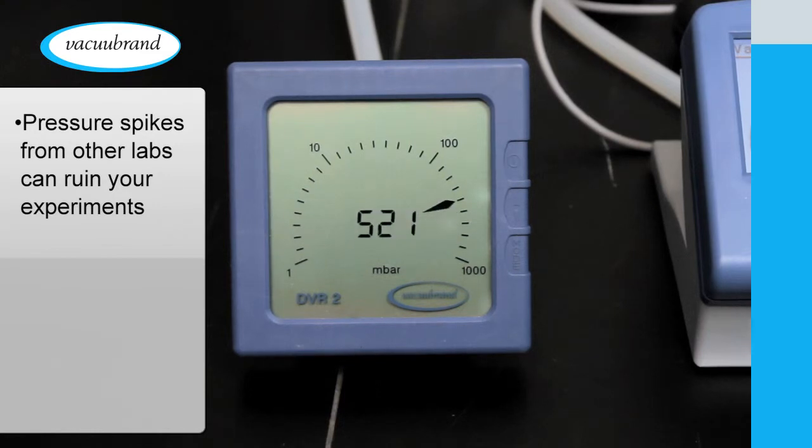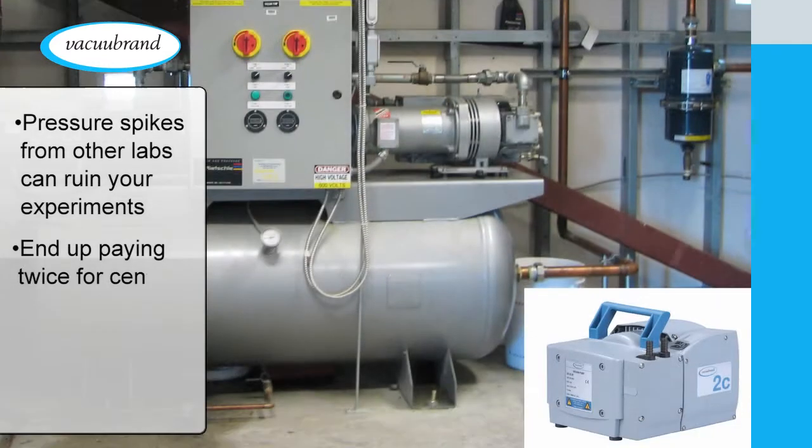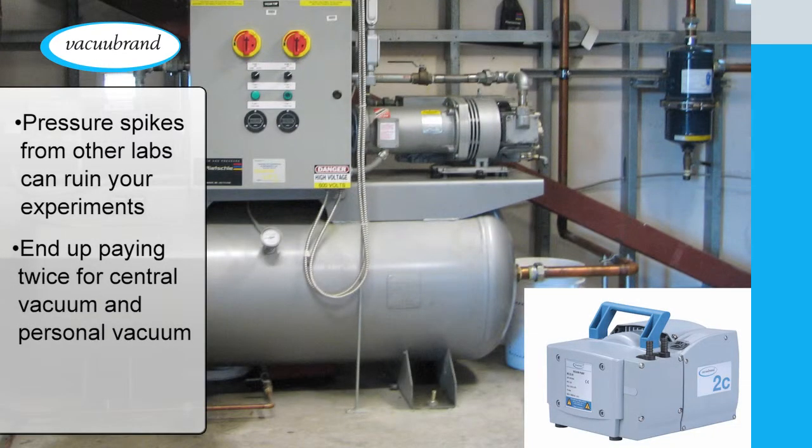Making matters worse, the vacuum from a central vacuum system isn't strong enough for many chemistry operations. You end up paying twice for vacuum: once for the central vacuum system, and again for vacuum that actually serves your scientific needs.